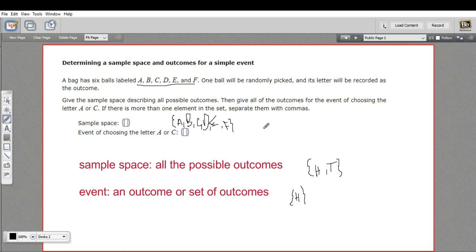Alright, and then it says, give all the outcomes for the event of choosing letter A or C. So in that particular event, that's a little bit strange. The event is that you pulled out either A or you pulled out C.